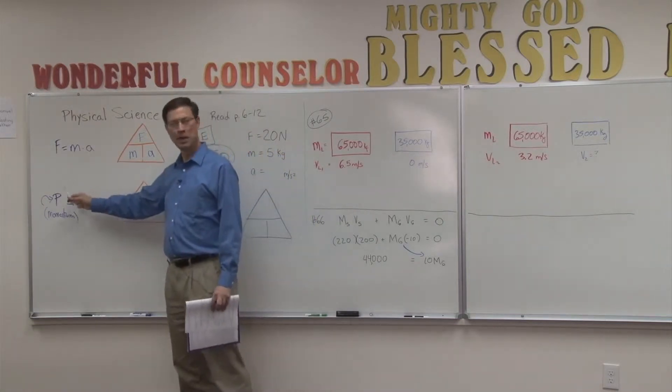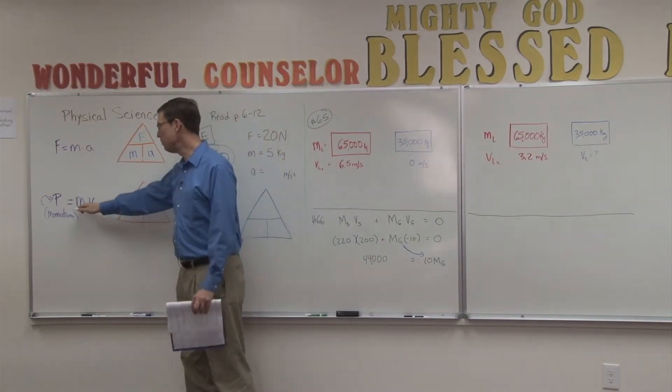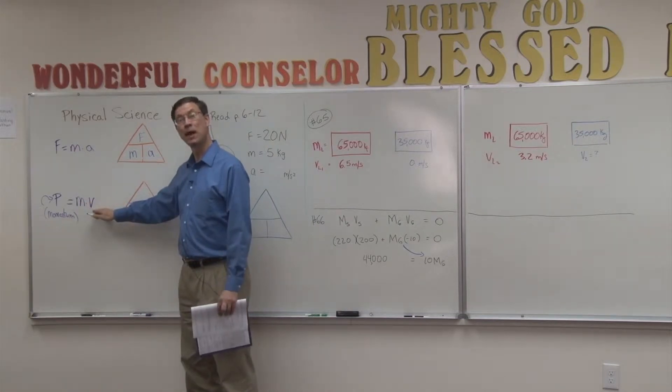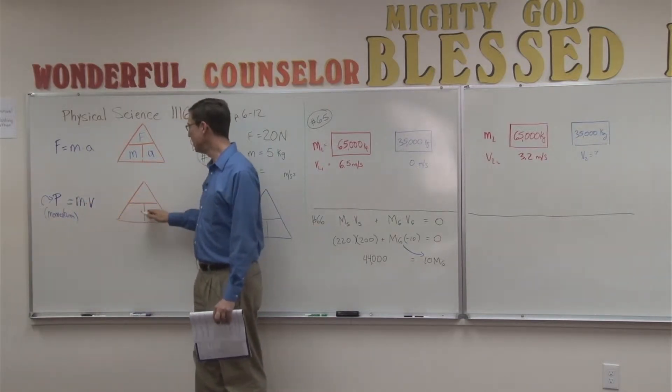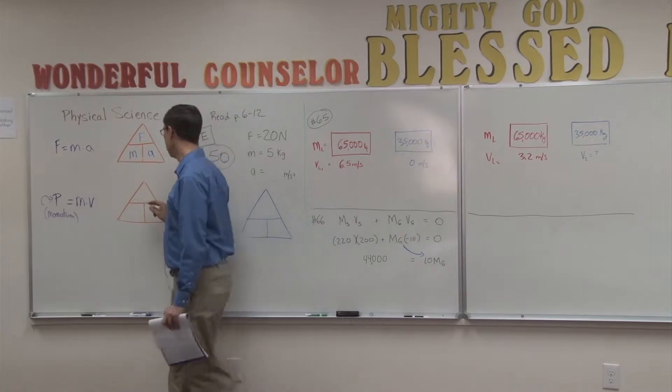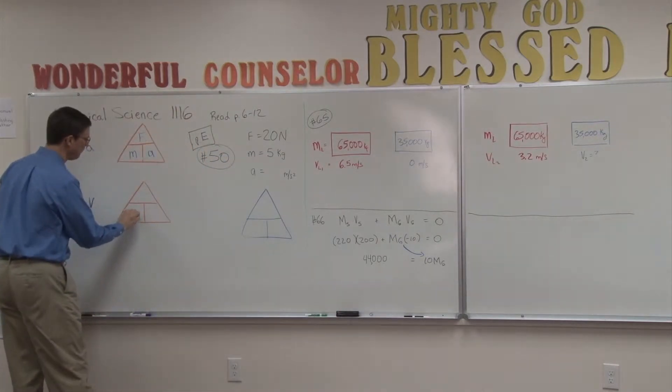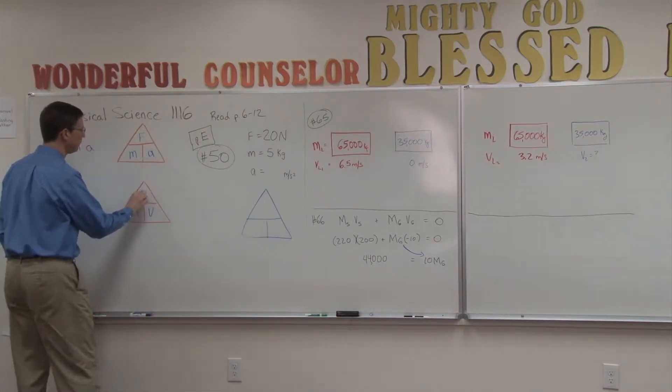So P is momentum. And again, mass and velocity are being multiplied together. So we'll put them down here on the bottom.